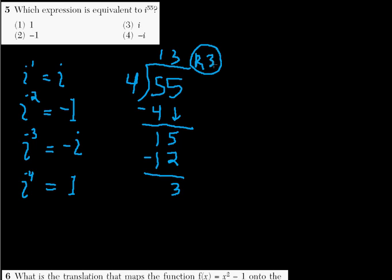This is the critical part, remainder of 3. The remainder of 3 tells us that the answer here is going to be negative i. And the reason for this is, this is just using properties of exponents.